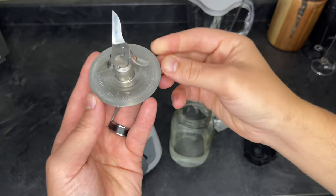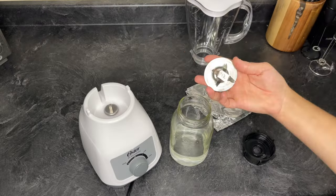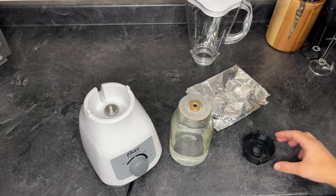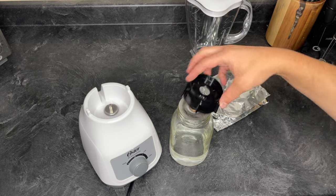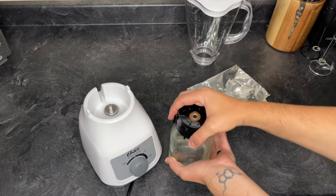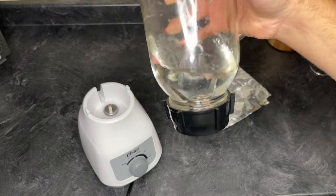This Oster blender has an all metal blade that can also fit on a regular mouth jar. I checked to make sure there's no leaks without using the silicone gasket that comes with the blender. After testing it, it seems to be a pretty good seal.